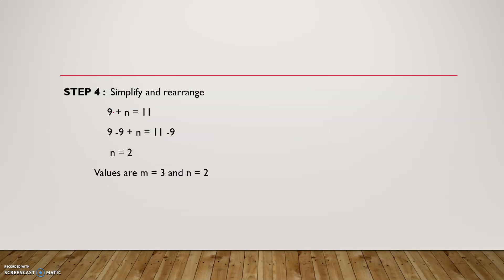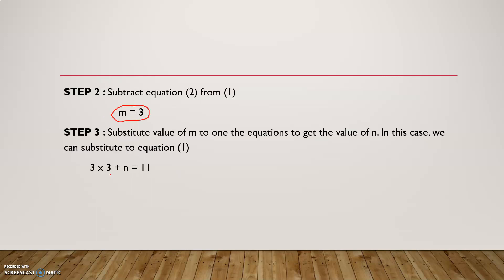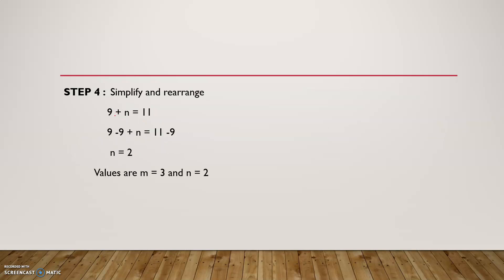Step 4: simplify and rearrange. 3 times 3 is 9, so we have 9 plus n equals 11. Now we subtract 9 from both sides: 9 minus 9 plus n equals 11 minus 9. The 9s cancel out, giving us n equals 11 minus 9, which is 2.